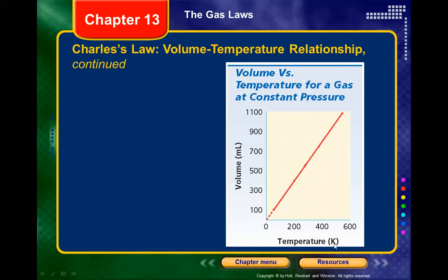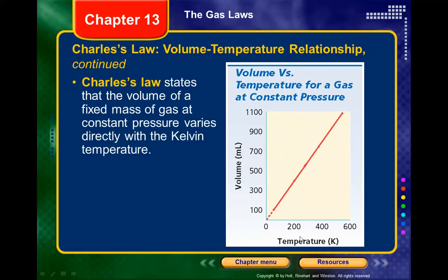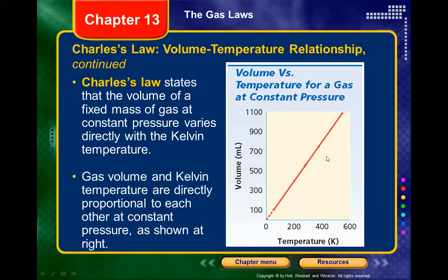When data is given in Celsius, we must add 273 to convert to Kelvin — we always work in Kelvin for these gas laws. Charles's law states that the volume of a fixed mass of gas at constant pressure varies directly with Kelvin temperature: as temperature goes up, so does volume.